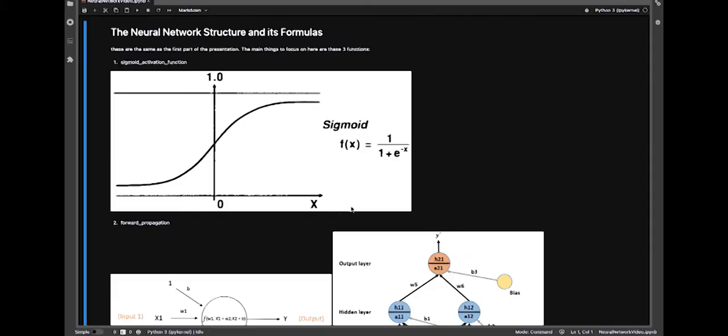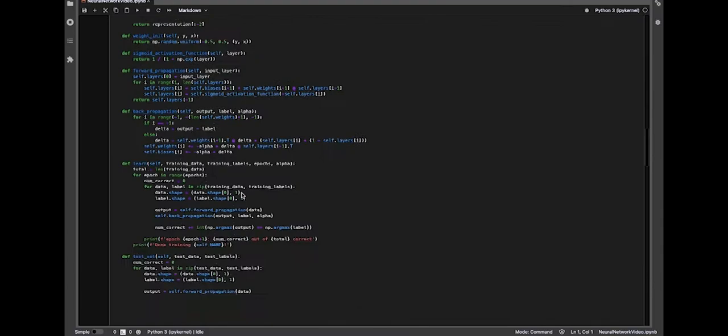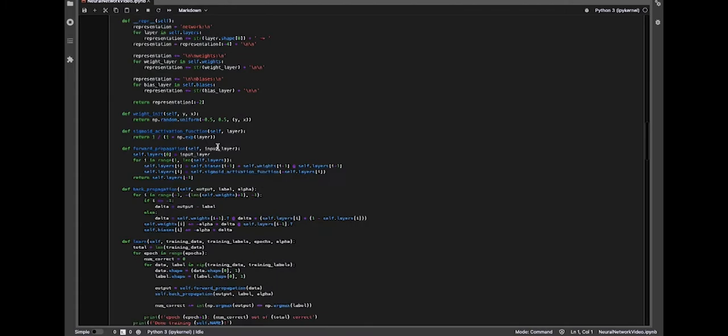Okay, so a live demo part. So this first section is just the structure of the neural network and how I defined it. It's basically everything from the last section, but now it's actually articulated with code, which may seem scary just looking at it all like this, but it's actually the exact same as the math in the previous section, just articulated differently.